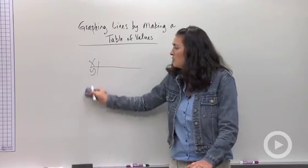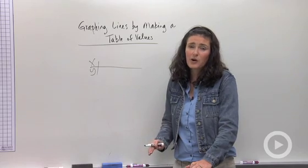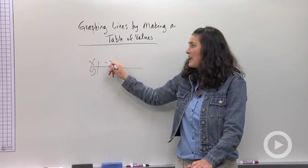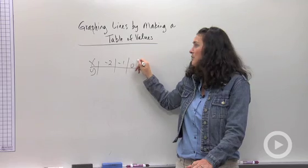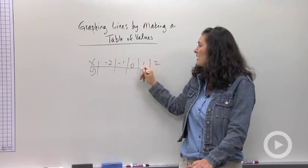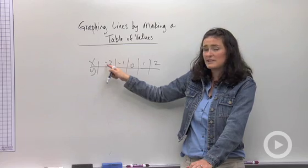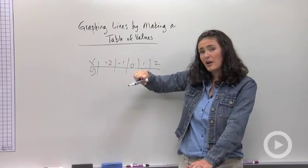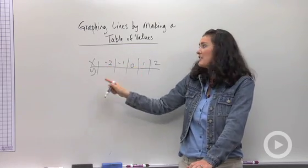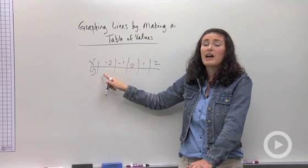And what you do is you choose any x numbers you want to. It's usually a good idea to use some negative values in addition to some positive values. And then what you do is one by one, you're going to substitute these x numbers into your equation as inputs to find your corresponding y value output.